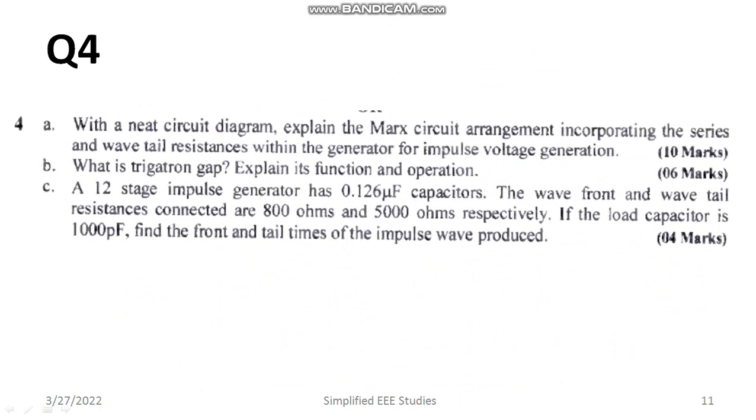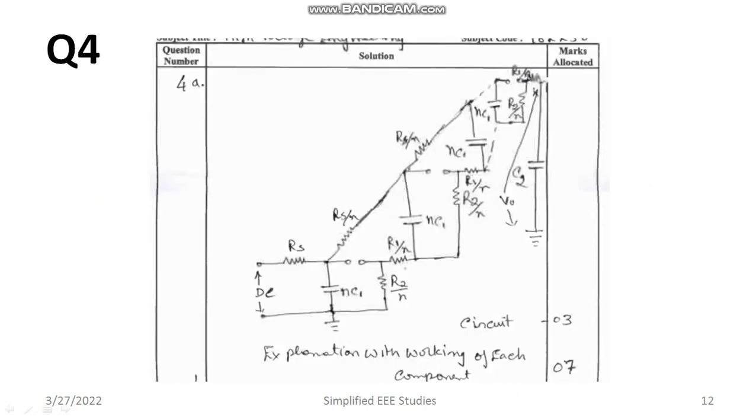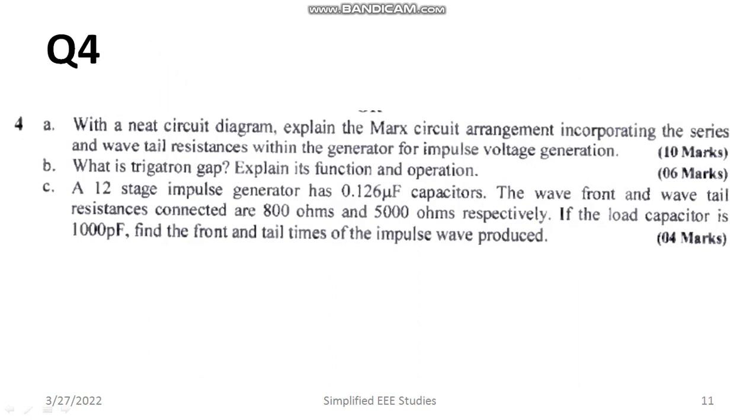Moving on to question number 4. With a neat circuit diagram, explain the Marx circuit arrangement incorporating the series and wave tail resistance within the generator for impulse voltage generation. We require a circuit diagram like this. Or if you are not comfortable, you can go for the conventional way. Then we can explain the particular functions of each resistor: wave front resistor, wave tail resistor, and how about the connections of capacitor. Total it has the weightage of 10 marks.